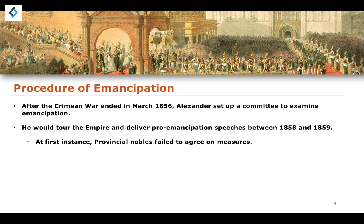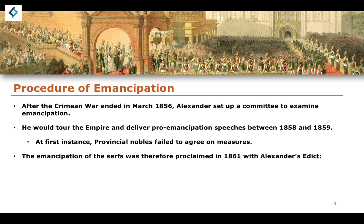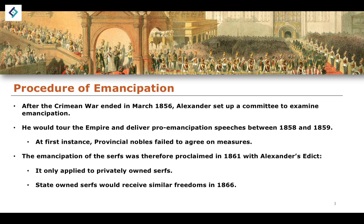At first, the provincial nobles, whom Alexander needed to get on side for agreement on emancipation, initially failed to agree on measures that would bring about a procedure of emancipation. The emancipation of the serfs was therefore proclaimed by the Edict of 1861 — Alexander's Edict. It applied only to privately owned serfs; state-owned serfs would receive similar freedoms but would have to wait until 1866. So the Emancipation Edict of 1861 was relatively limited in scope, though a similar emancipation followed in 1866 for state-owned serfs.